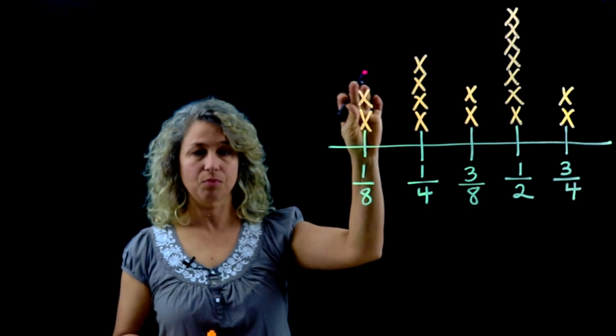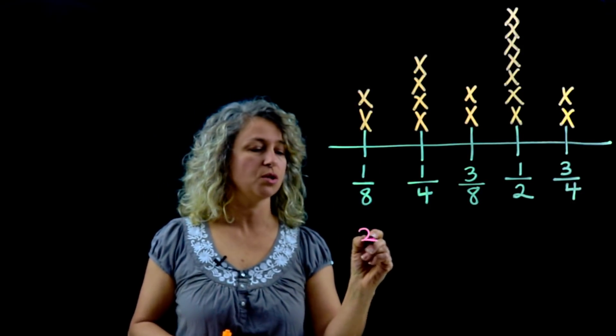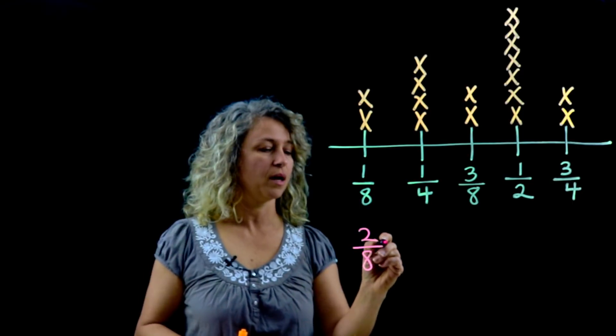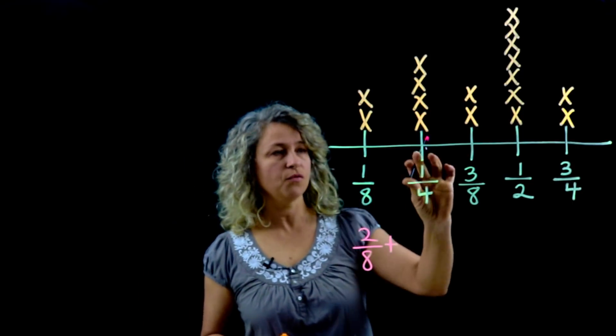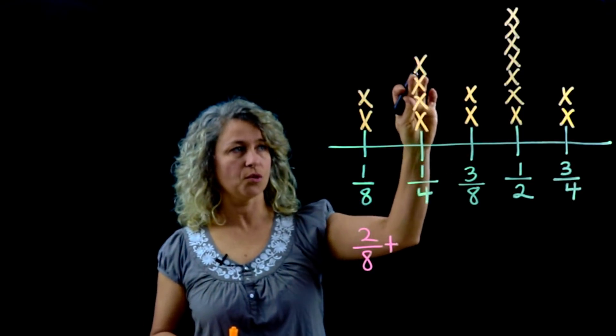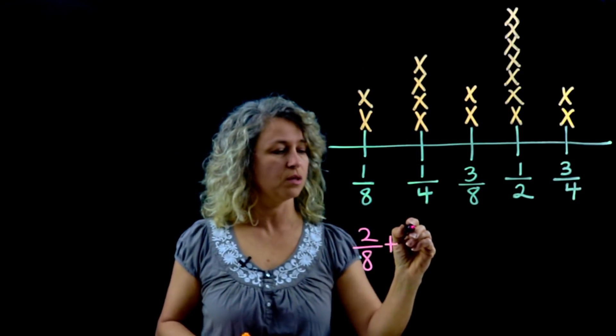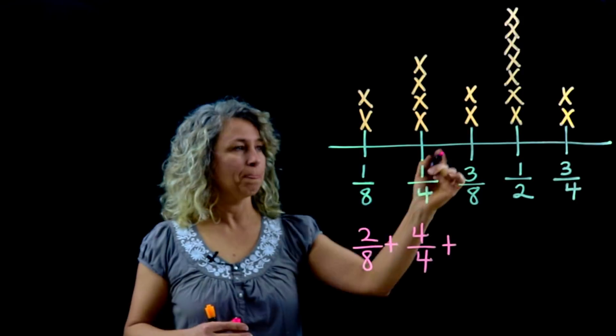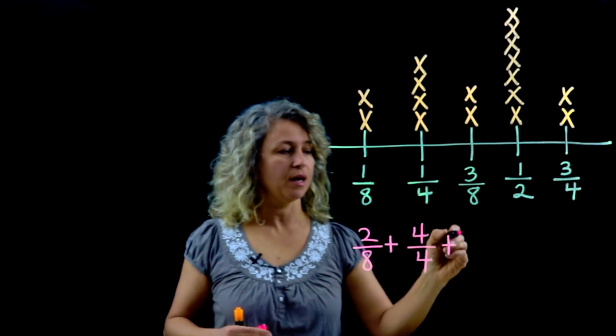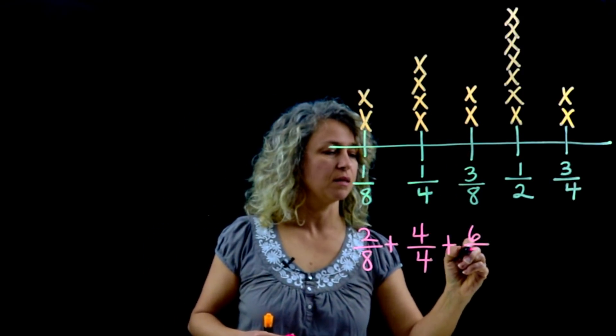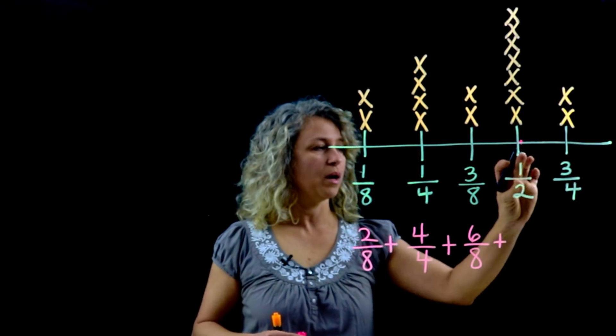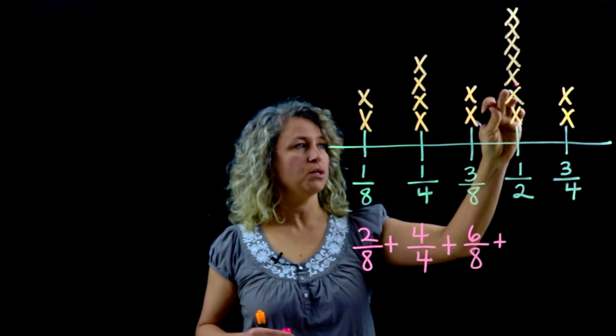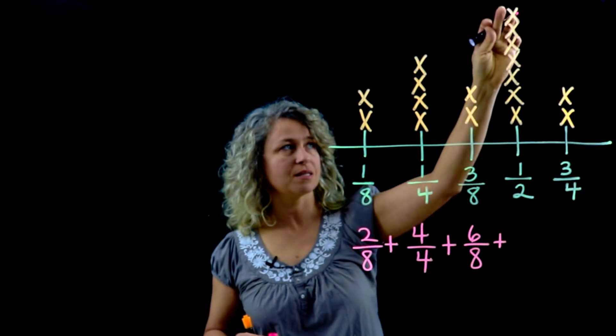Let's look at the first value: one-eighth. There are two X's with data points for one-eighth, so this is one-eighth plus one-eighth, which is two-eighths. One-fourth plus one-fourth plus one-fourth plus one-fourth is four-fourths, which means one whole.